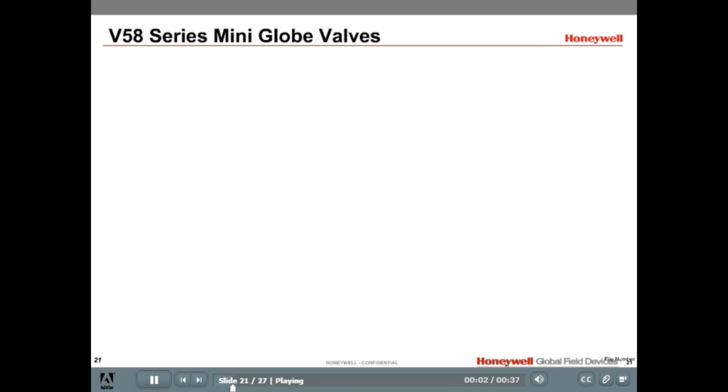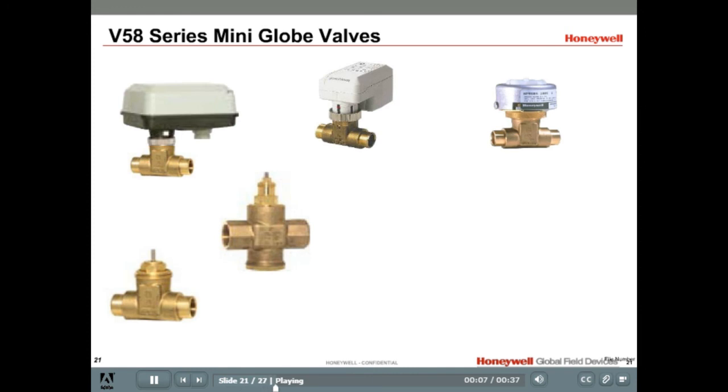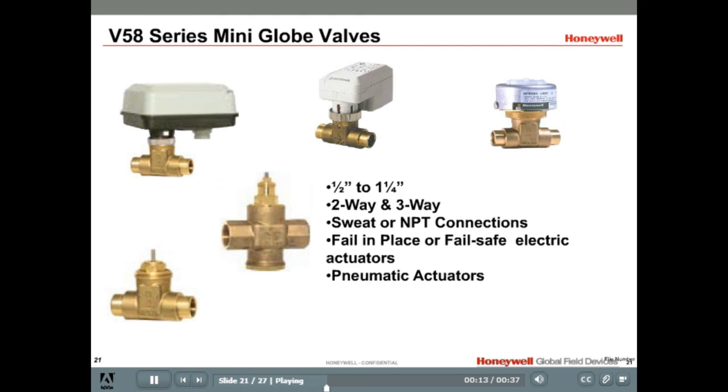In addition to the V5011 and VGF valves, Honeywell also offers a line of cost-effective cartridge globe valves designed specifically for modulating unitary equipment. These compact two and three-way valves are available from one half inch to inch and a half with sweat and NPT port connections. The actuators are pneumatic or electric. With the electric actuator you have a choice of fail in place or fail safe operation. Unlike the standard globe valve, V58 series globe valves are designed specifically for hot and chilled water applications and should not be used on steam applications.